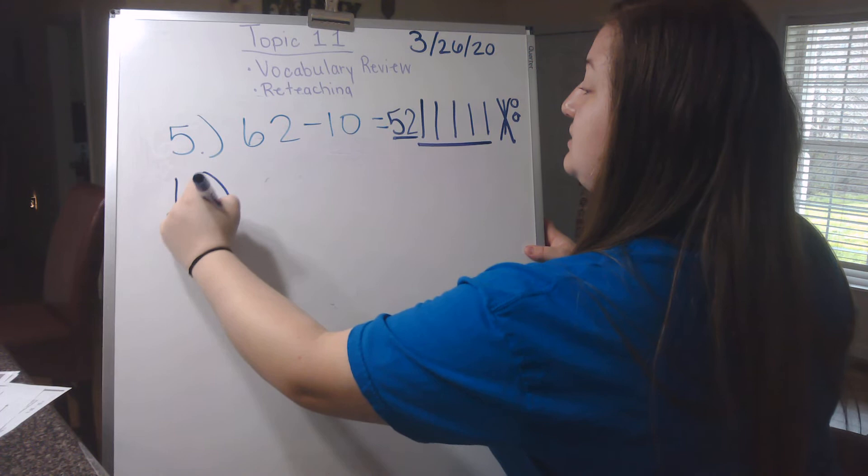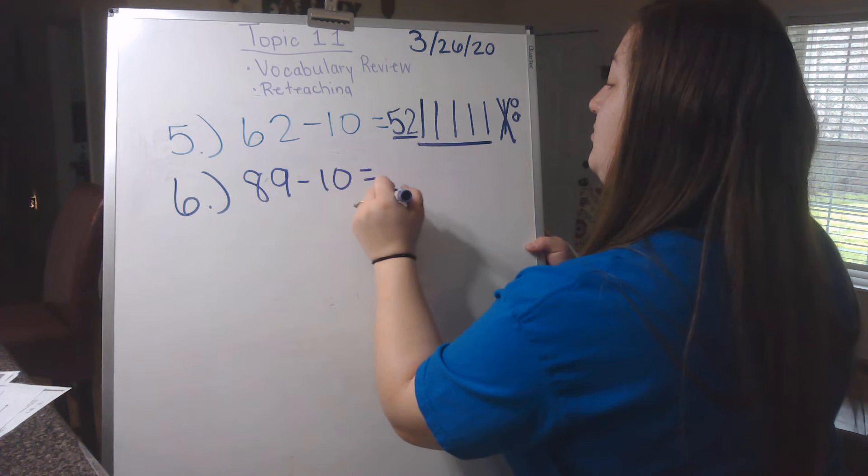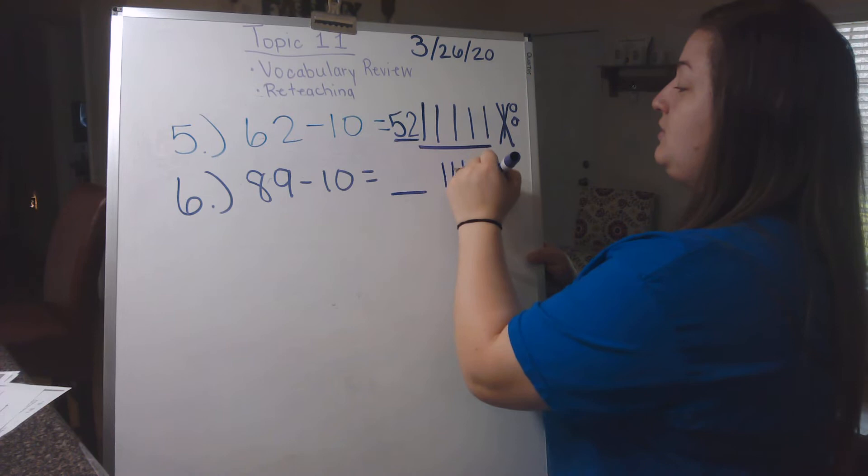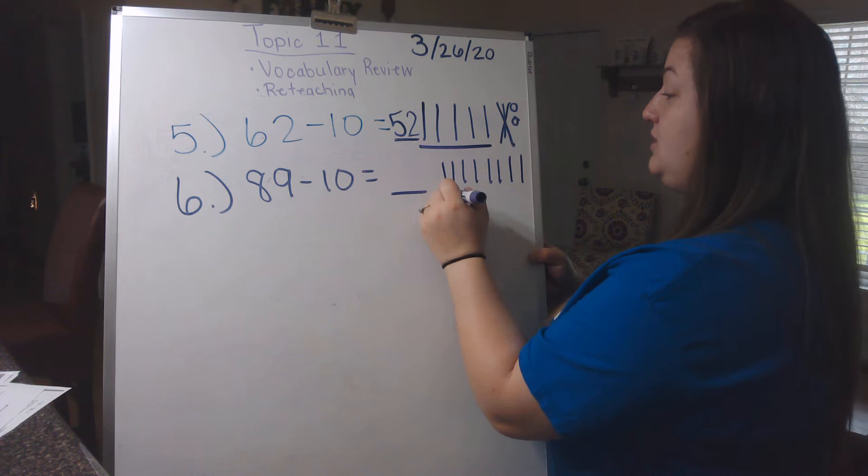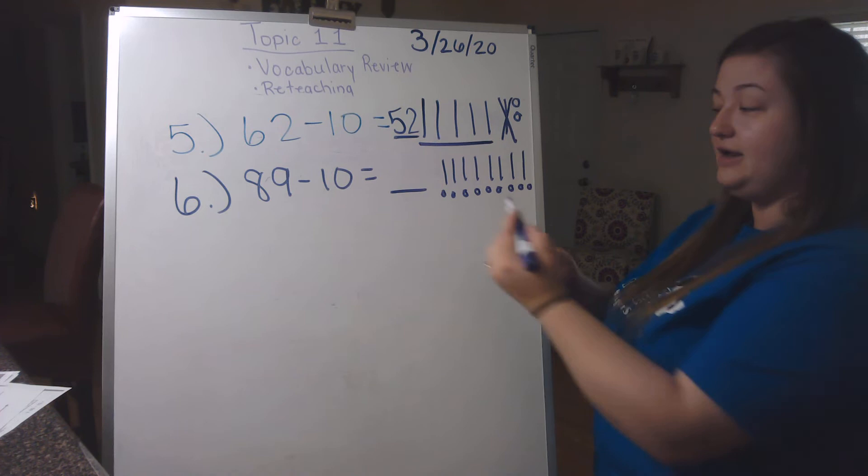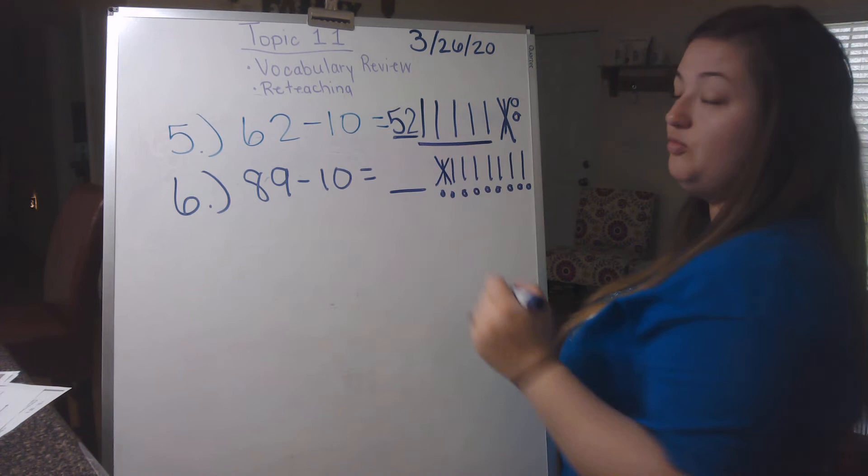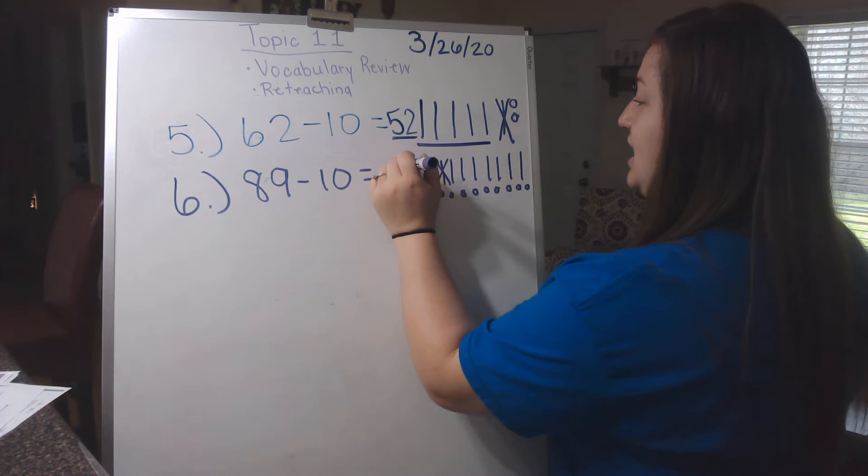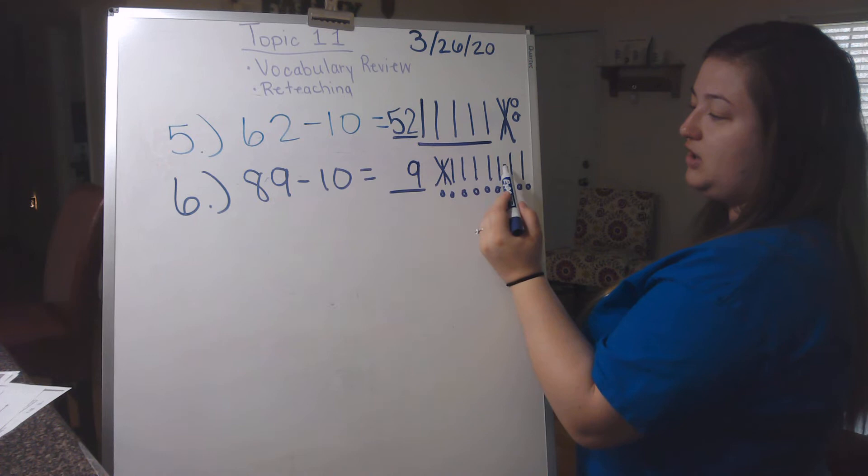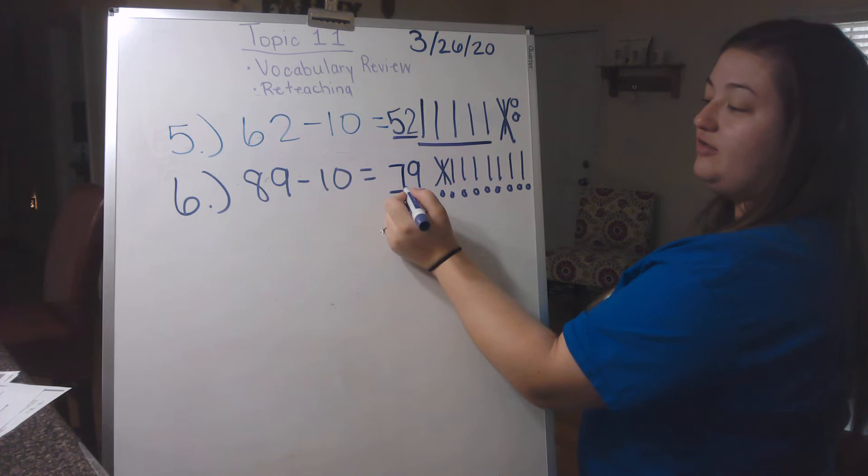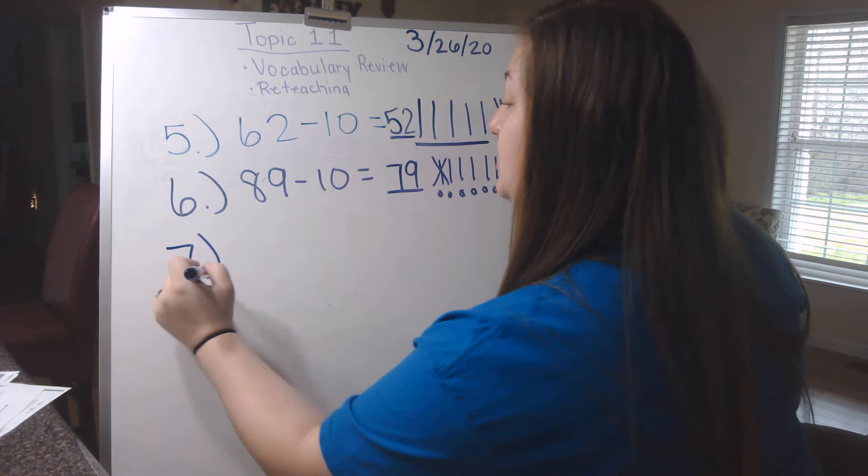Number 6 says 89 subtract 10 equals blank. So 89 subtract 10. I'm just going to put a mark through one of my tens. Now I know that my ones digit is going to stay the same, so I'm going to go ahead and put my 9 in my ones place. And then I'm just going to count my tens. So I've got 10, 20, 30, 40, 50, 60, 70. So 89 subtract 10 gives me 79.